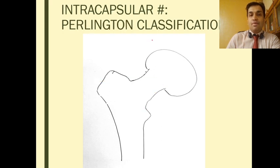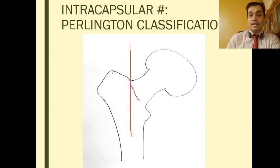There is also a Perlington classification, which gives the angulation of the fracture line with respect to the vertical. Perlington A is 30 degrees from the vertical, Perlington B is 50 degrees from the vertical,